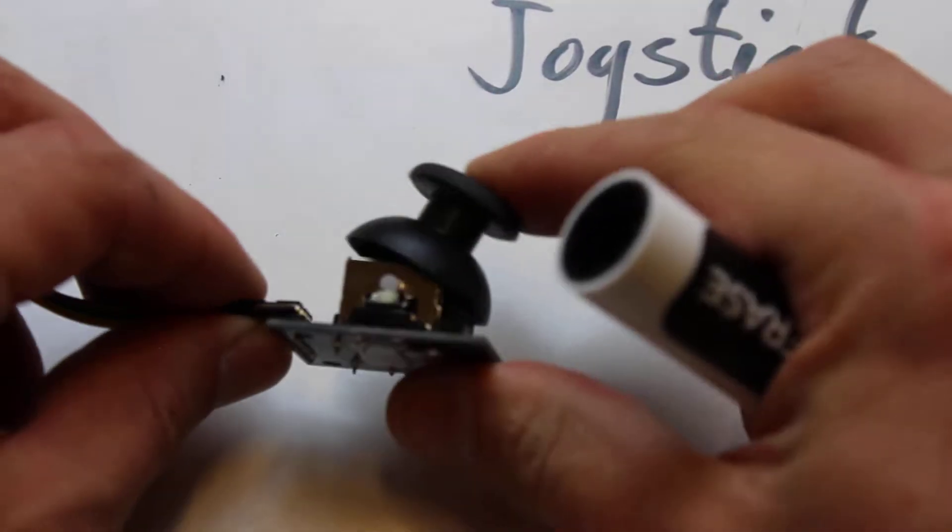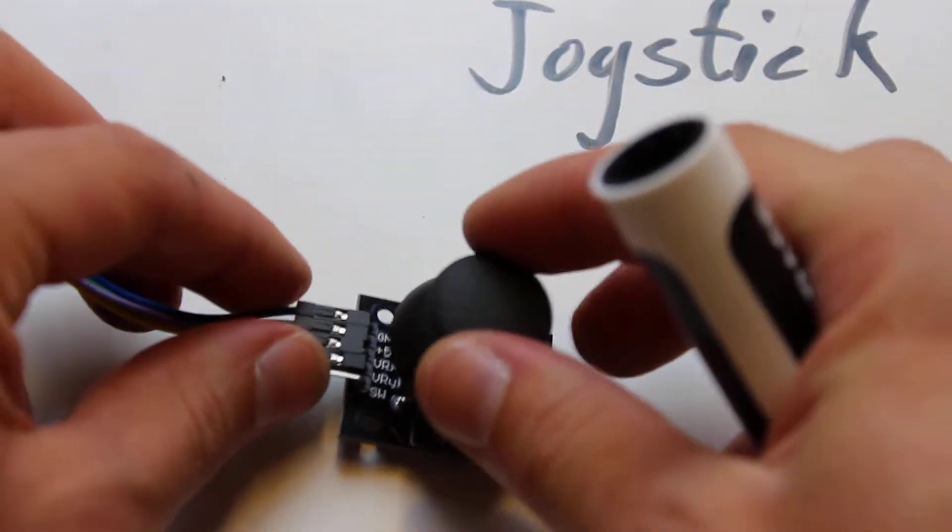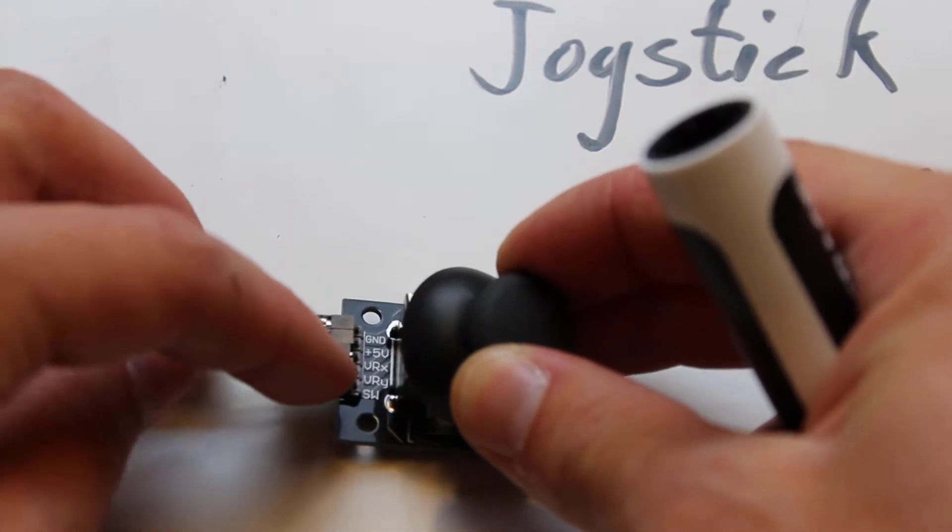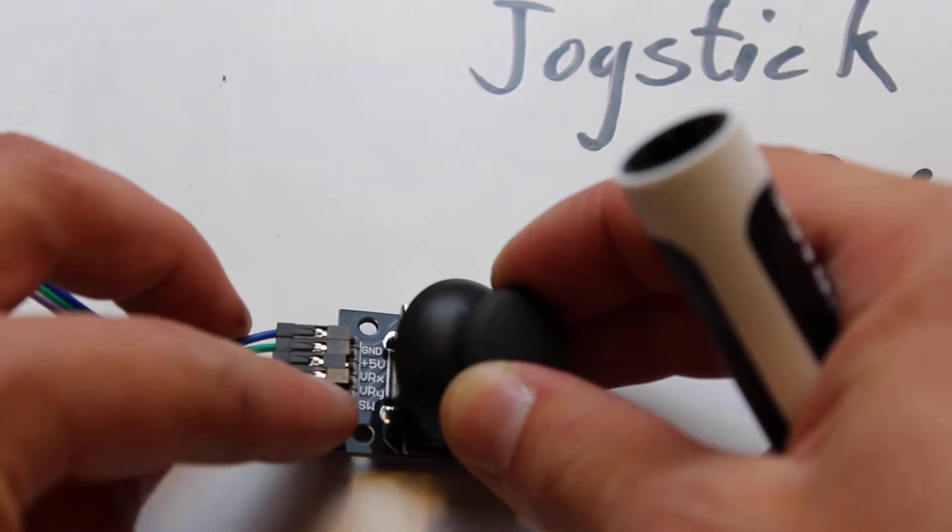You've got one for going forward and one for going from side to side. And on the pins here, you've got several pins. You've got ground, 5 volts, VRX and VRY.